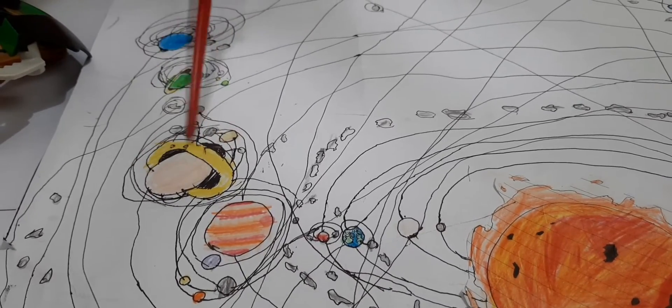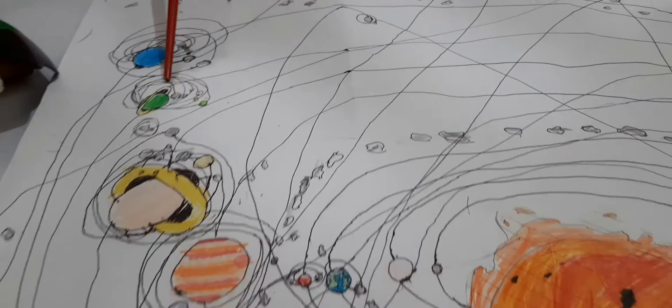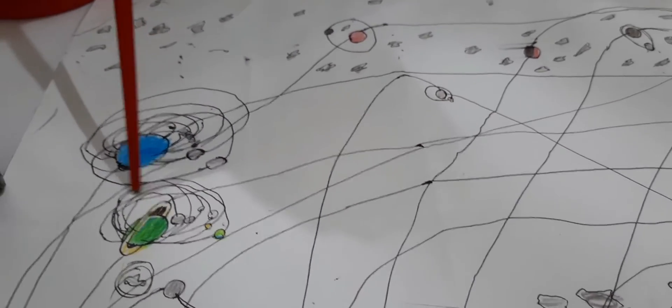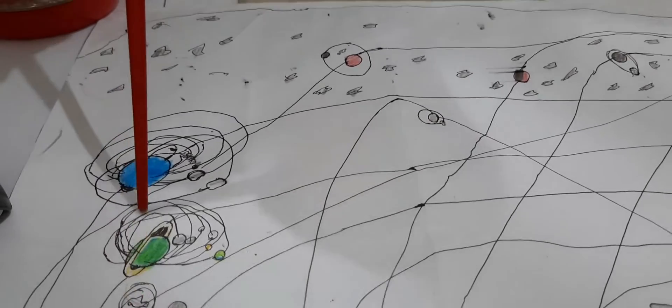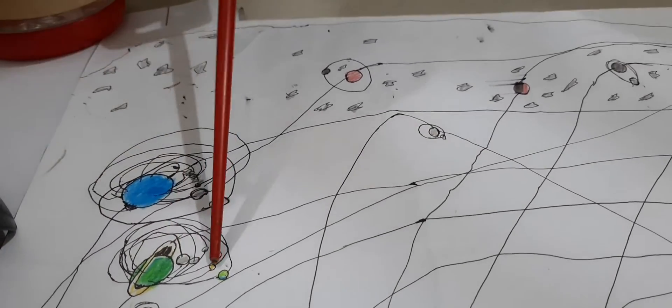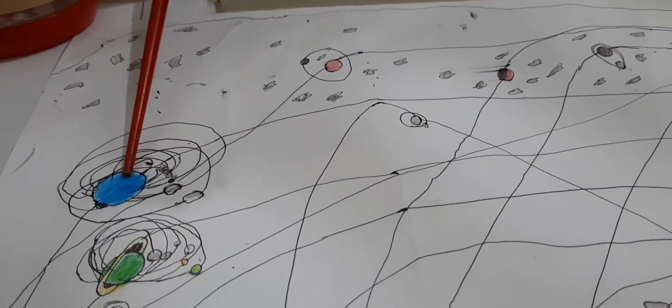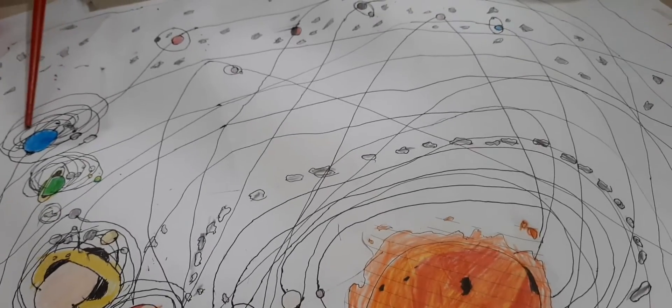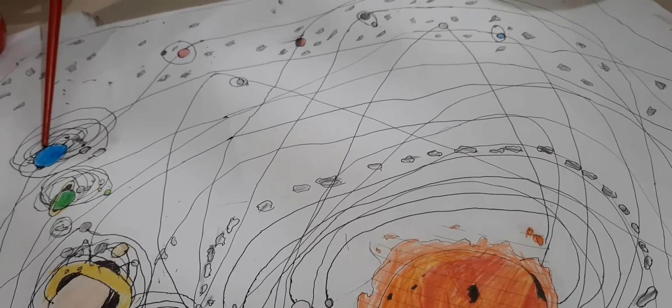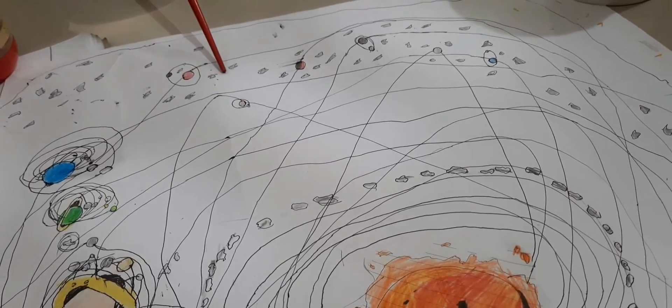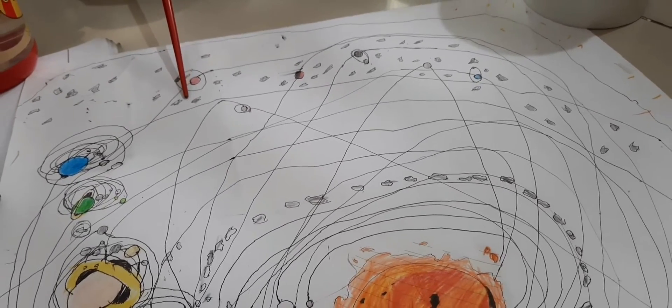It has rings. Here's Uranus. It is the third planet made out of gas. And here's Neptune. It's the eighth planet from the sun and also the last gas planet. Now we'll do the dwarf planets.